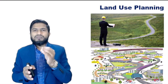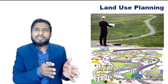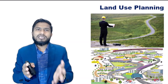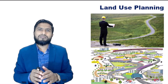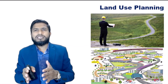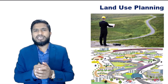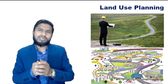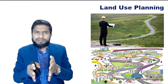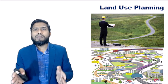Land use planning refers to the process by which a society, through its institutions, decides where within its territory different socio-economic activities such as agriculture, housing, industry, recreation, and commerce should take place. Land use planning is a public policy exercise that designates and regulates the use of land in order to improve a community's physical, economic, and social efficiency and well-being. The Food and Agricultural Organization defines land use planning as the systematic assessment of land and water potential, alternatives of land use, and economic and social conditions in order to select and adopt the best land use options.